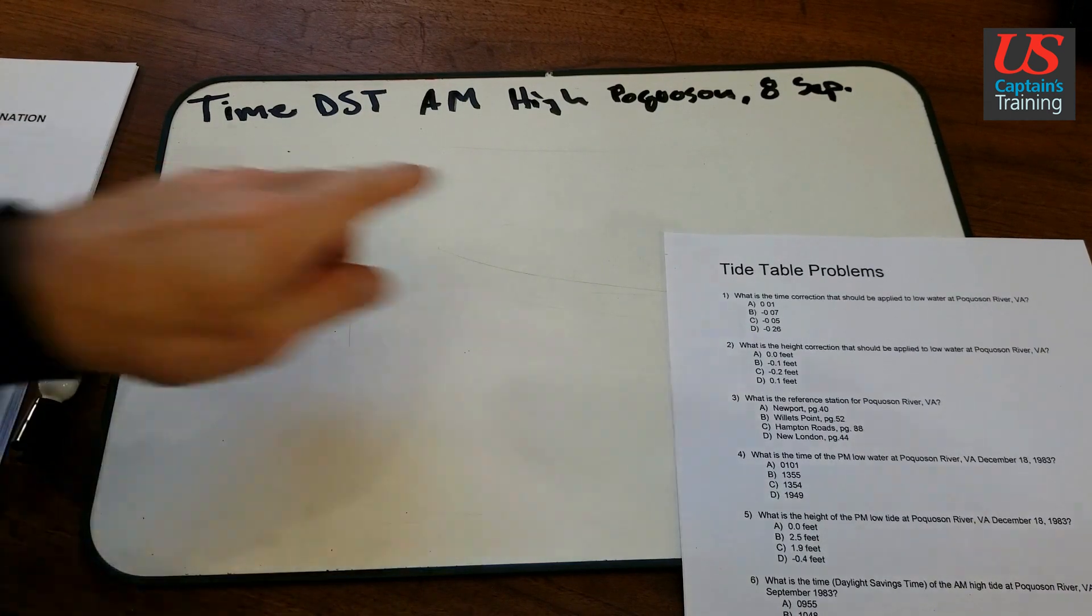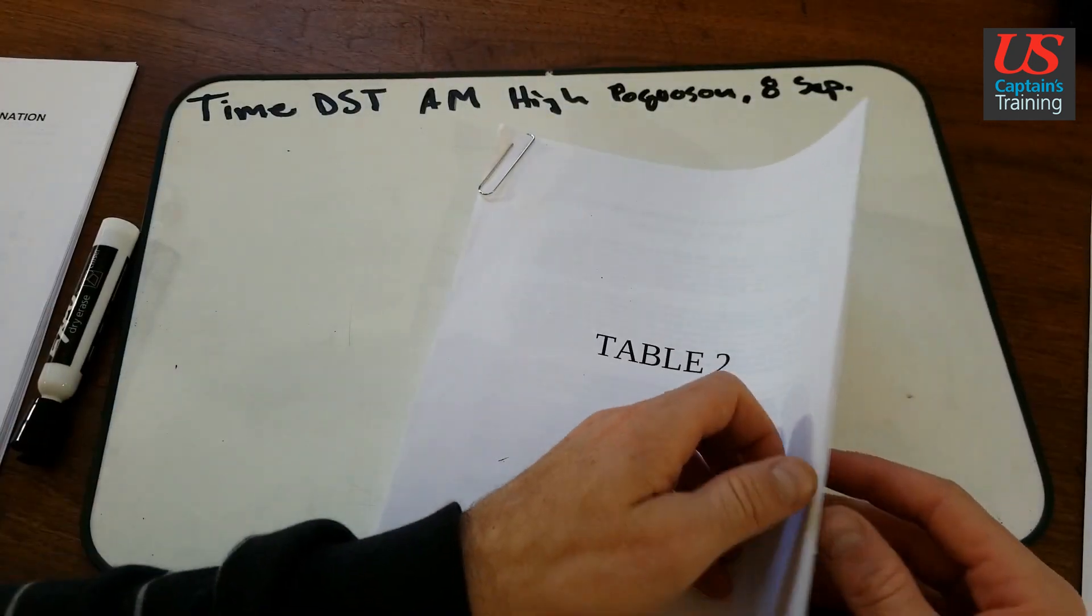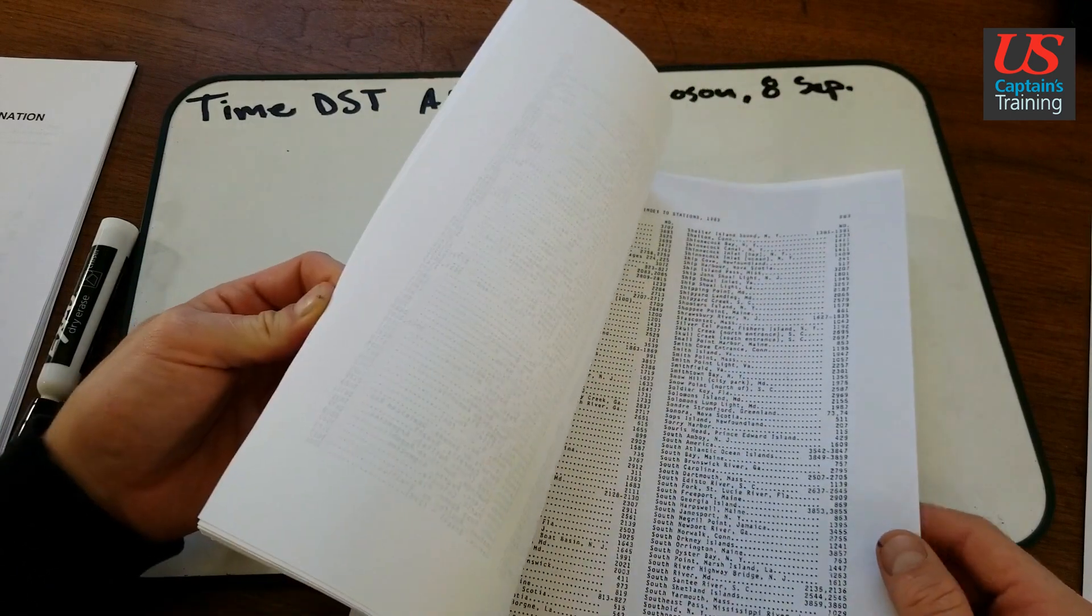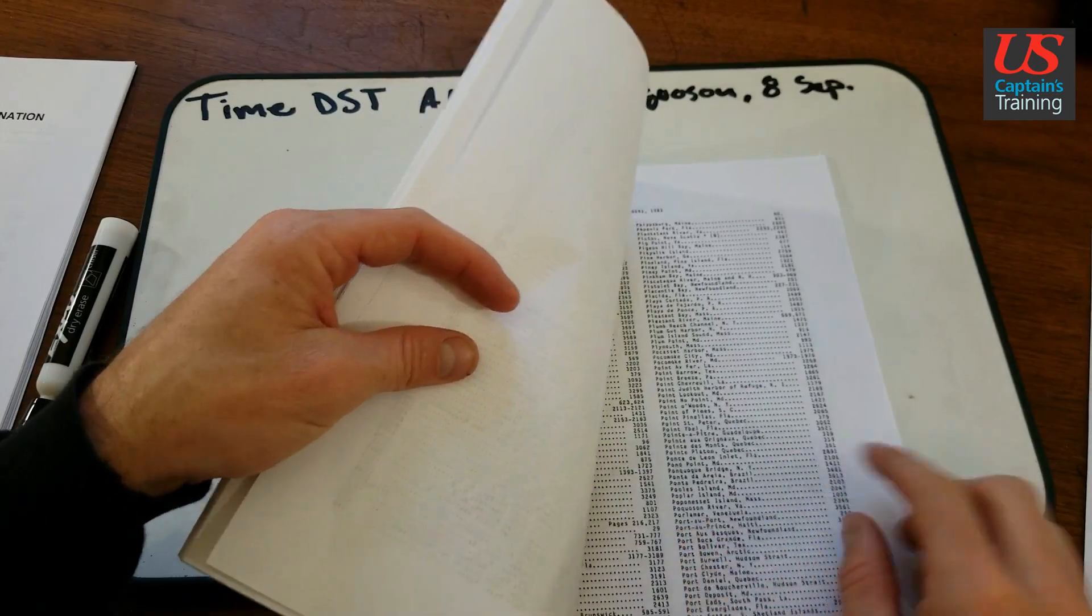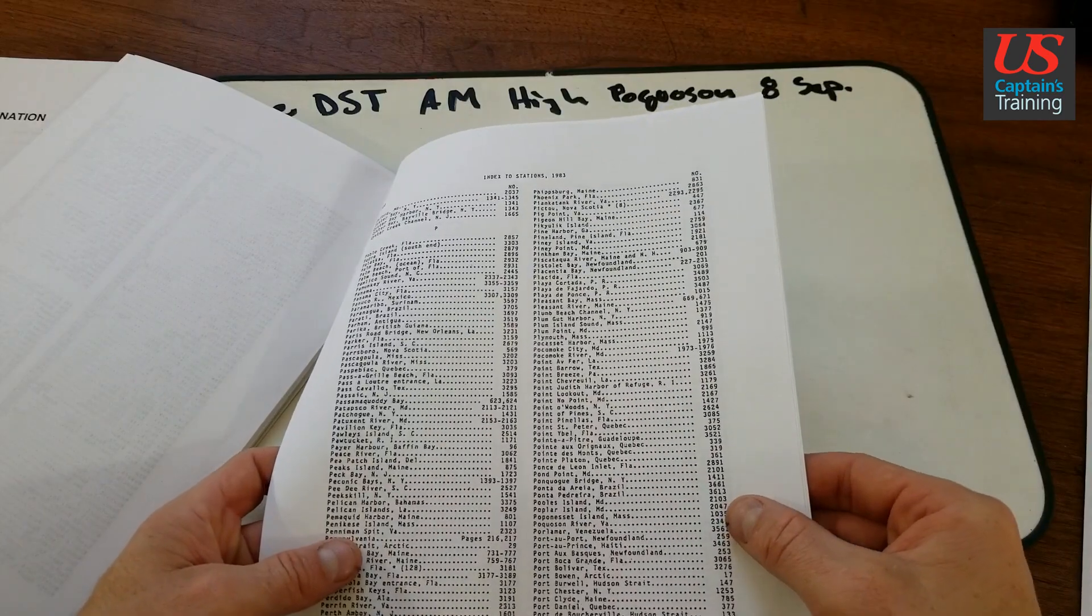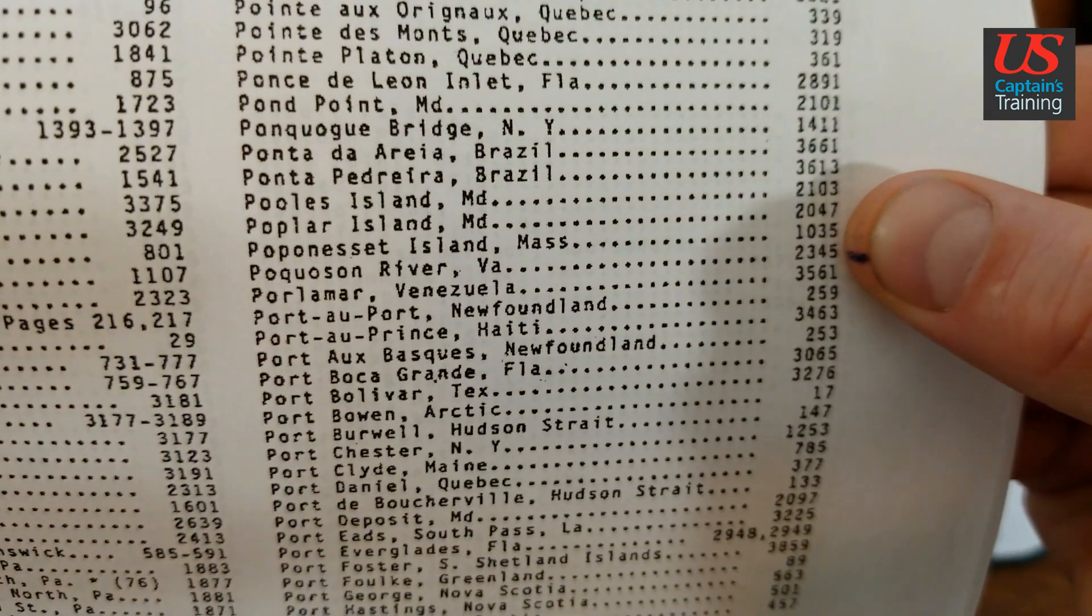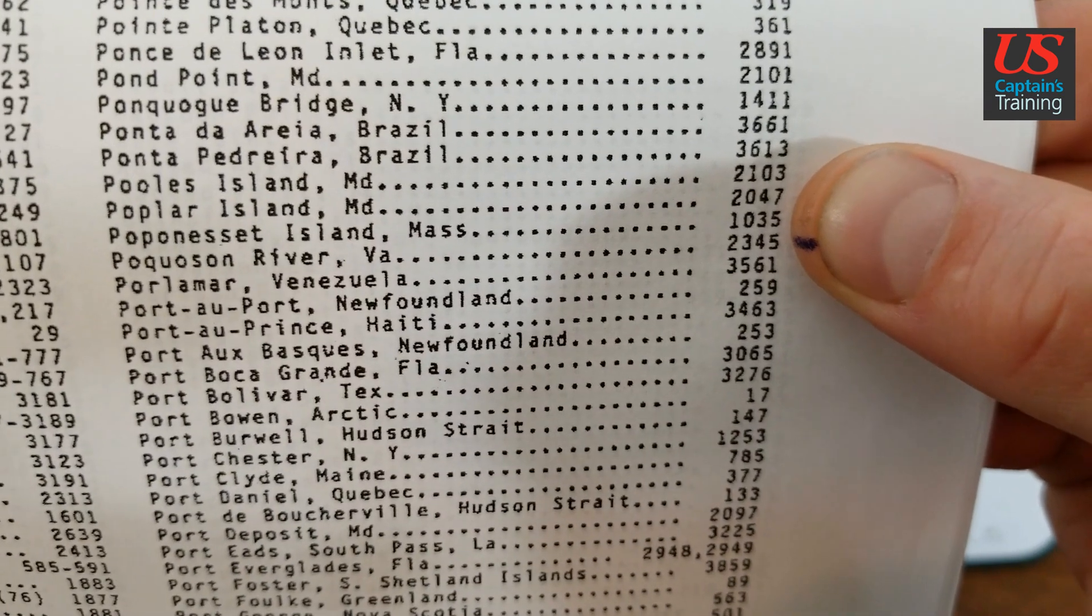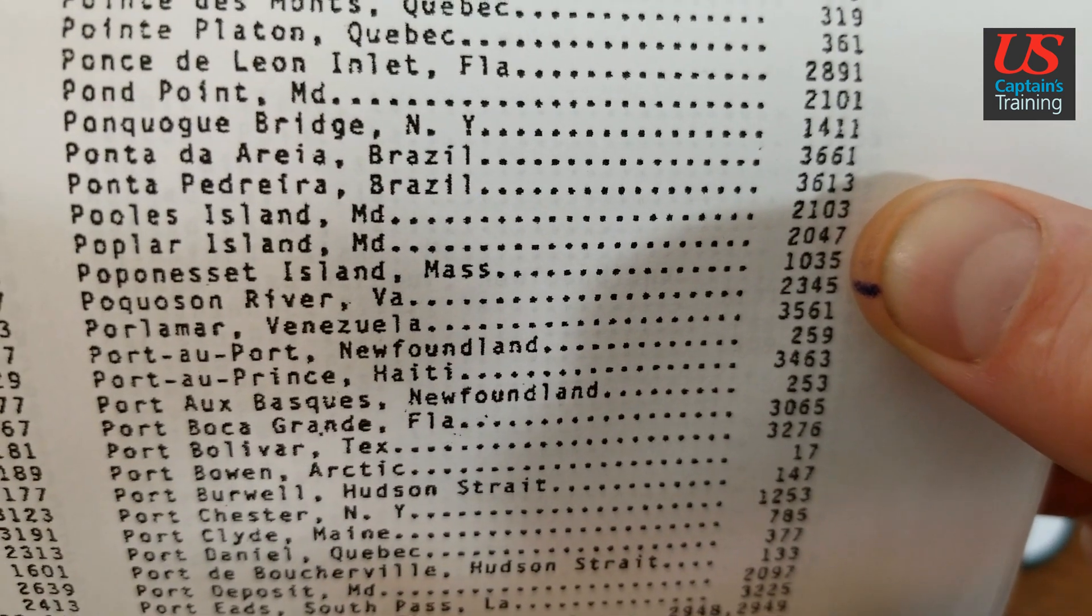So let's go find Pocosin River in the table 2 index. You go to the index, which is in the back. Going through the letters: P, O, Q. Here we have it, Pocosin River VA. Right there. The number is 2345. That little blue tick mark on my thumb is the pointer. Pocosin River VA, 2345.